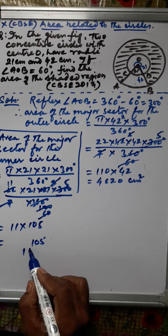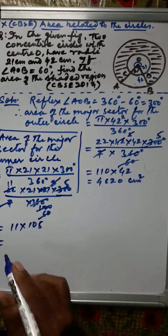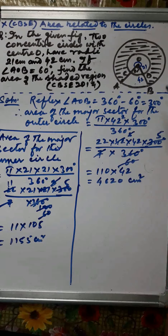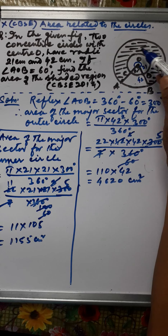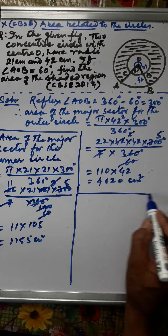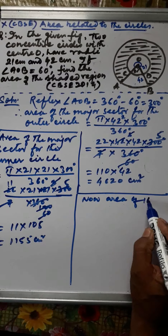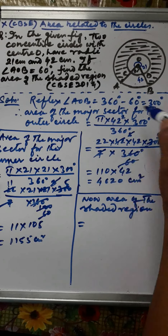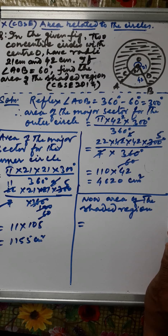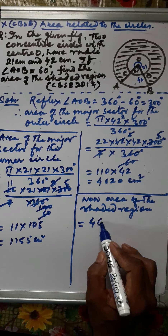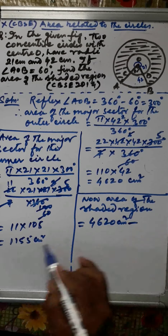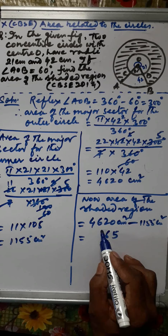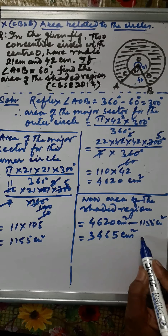The area of the major sector for the smaller circle is 1155 centimeters square. Now subtract to get the area of the shaded region: 4620 cm² minus 1155 cm² equals 3465 centimeters square. This is your answer.